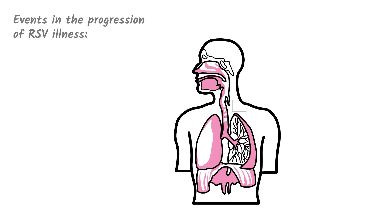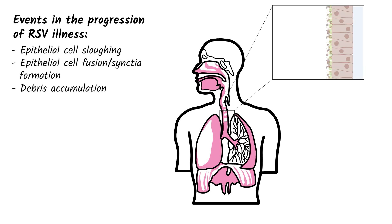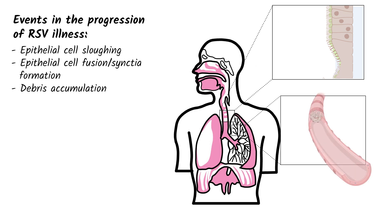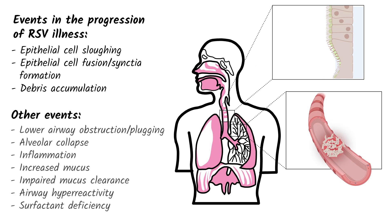As RSV illness progresses, epithelial cells slough away from the airway walls and fuse to form multinucleate syncytia, and debris accumulates in airway lumens. Other events, such as airway plugging, may also lead to severe lower respiratory disease.